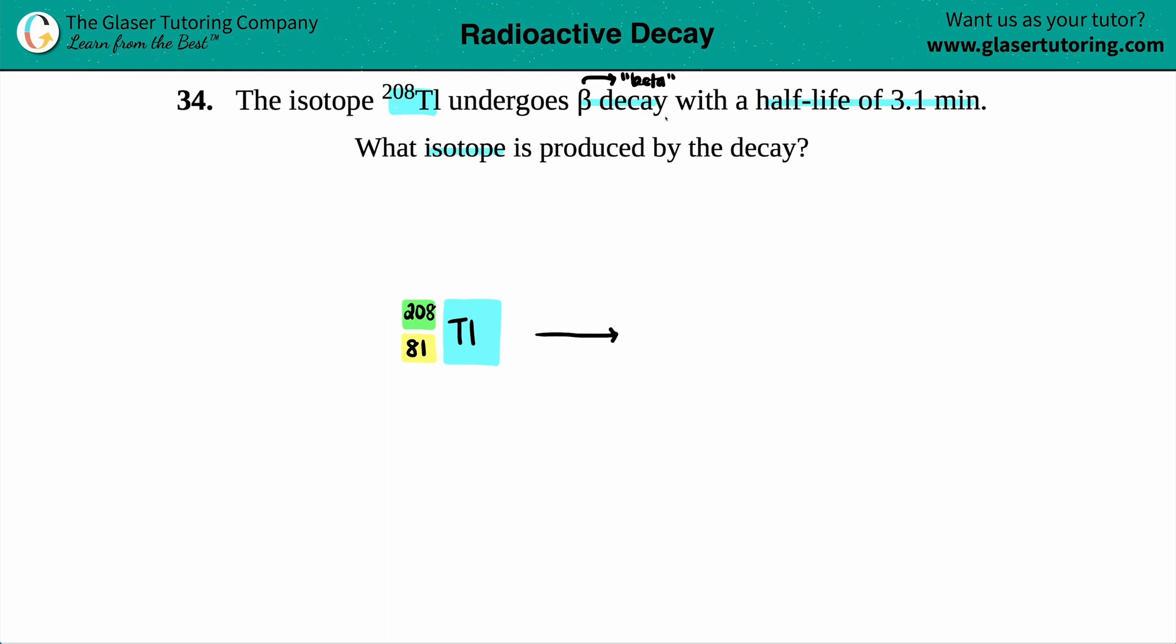Now this is going to decay with the beta, which means that there will be a beta that is released on the products. So let's put that there. We'll have another one of these, and now we have to undergo beta decay.